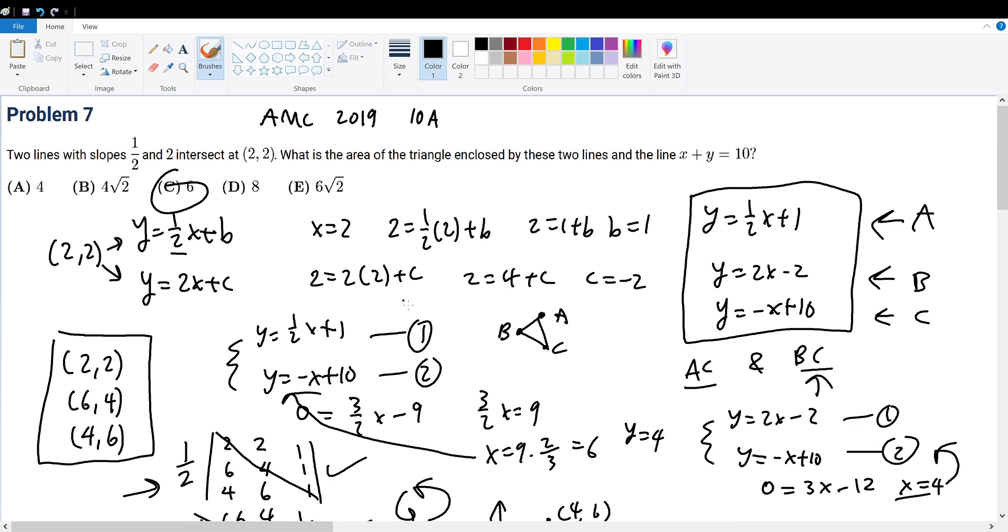Now, you could have done the same thing with Heron's formula, but that would have required you finding out the three side lengths and then finding its semi-perimeter, then following its formula. But this is definitely the easiest way to go, and you could have done many other ways as well, and the other answers are listed on the AOPS website, so please consider checking them out. But nonetheless, this is my solution, and the solution will be 6.